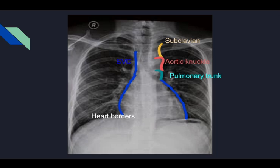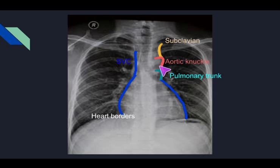Next we have to see the mediastinum. It is very important to know the anatomy of the mediastinum because so many structures are located here. On the left side, the subclavian vessel is seen as a convexity around the clavicle. Just below it is the question-mark-shaped aortic knuckle, which is the aortic arch. Below that is another convexity — the pulmonary trunk or pulmonary bay. Between these two is an important area called the aortopulmonary window, which is a key landmark for mediastinal lymphadenopathy.